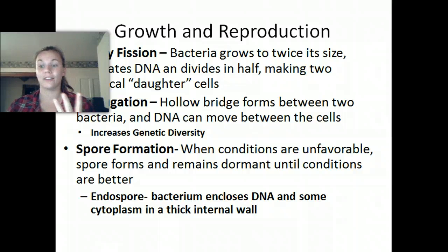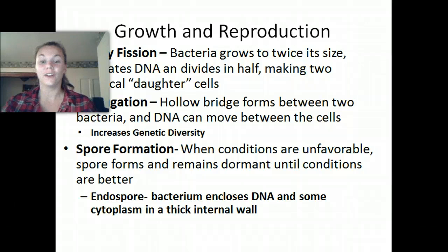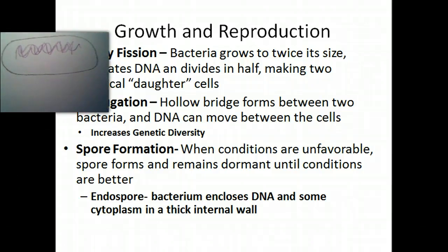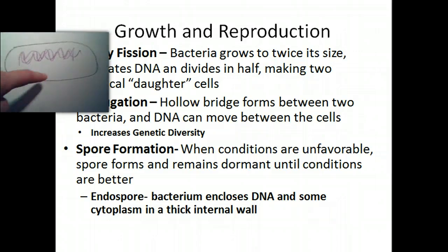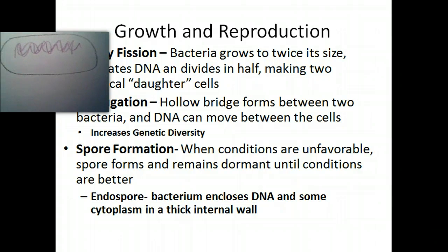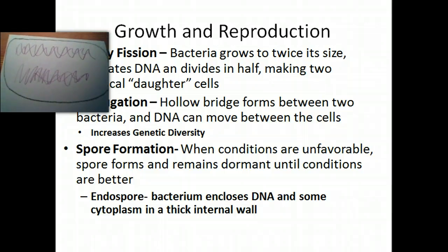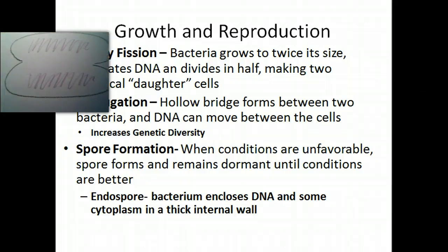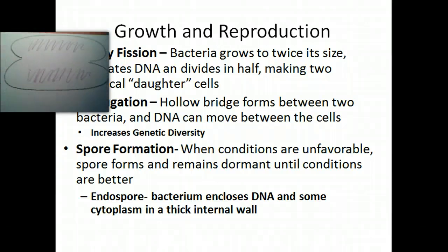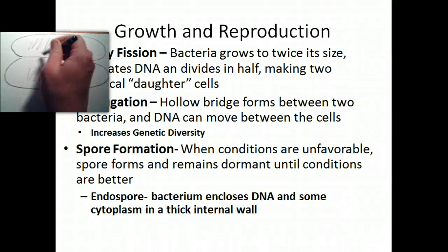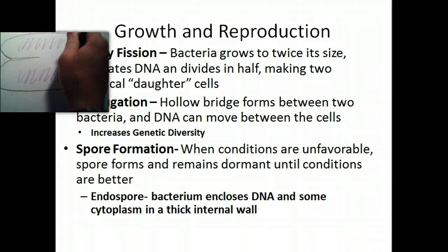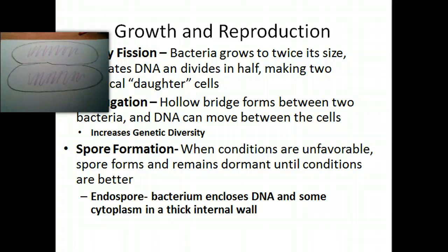There are three different ways bacteria can grow and reproduce — all three are totally cool. The first is called binary fission. We have our bacteria — a bacillus — with a cell wall and DNA floating freely inside. The cell first grows to be twice its size and replicates its DNA, so there are two sets of identical DNA inside. Then fissures start forming on each side, getting deeper and deeper until eventually the cell splits into two identical daughter cells. That's binary fission.